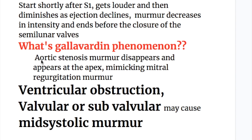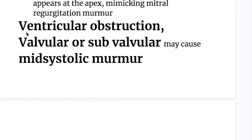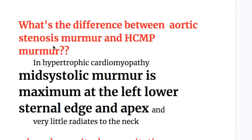Galavardin phenomena: the aortic stenotic murmur disappears from the right second intercostal space and appears at the apex beat area, mimicking mitral regurgitation murmur. Other causes of mid-systolic murmur include ventricular obstruction, valvular or subvalvular causes. In hypertrophic cardiomyopathy, the mid-systolic murmur is maximum at the left lower sternal edge and apex beat area, with very little radiation to the neck — unlike aortic stenotic murmur, which is in the right second intercostal space and radiates to the neck.